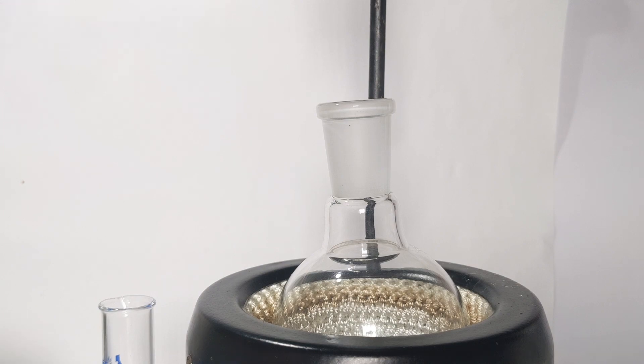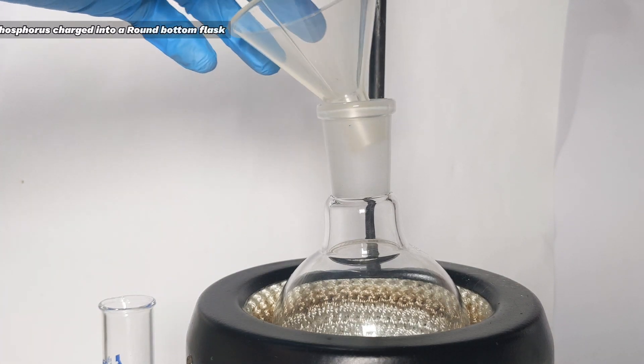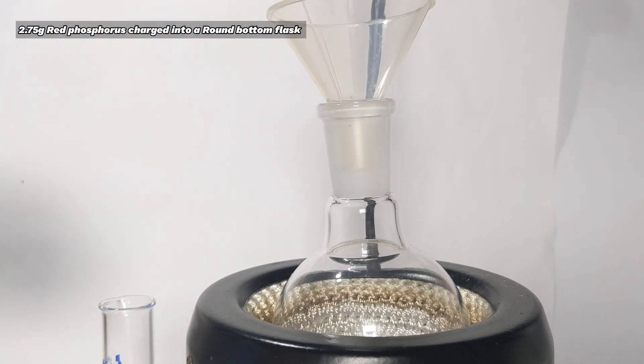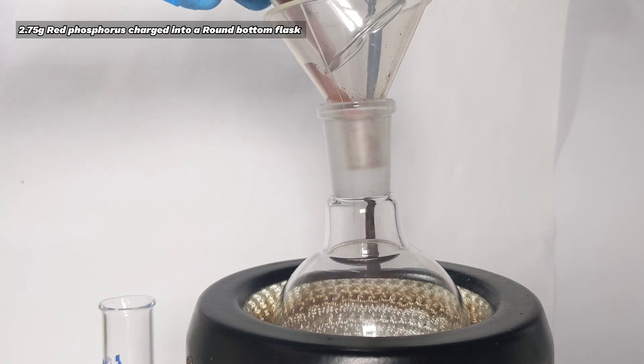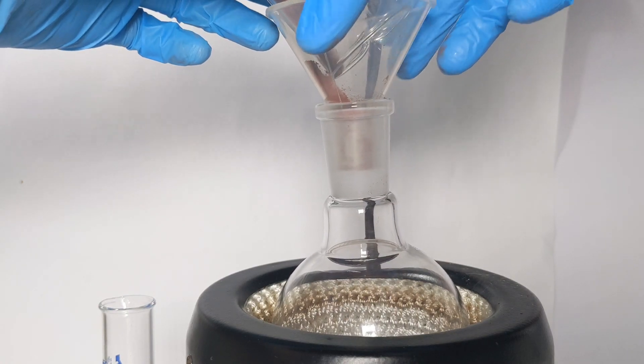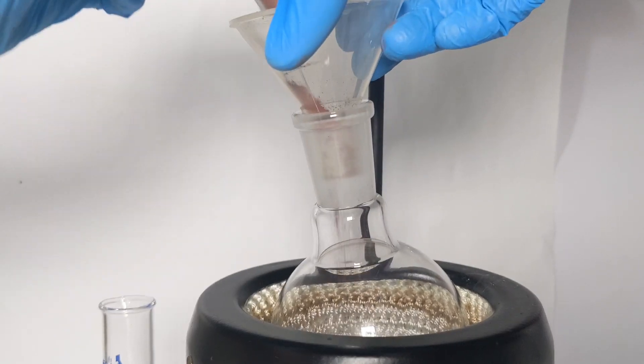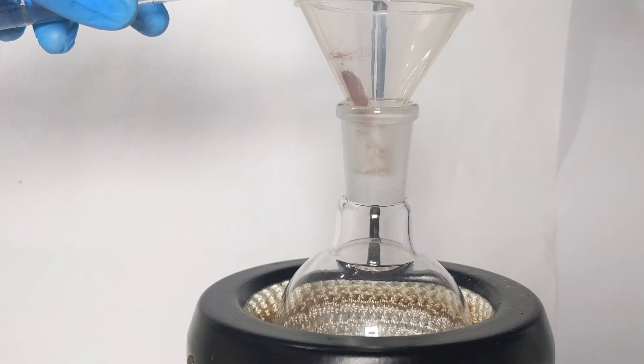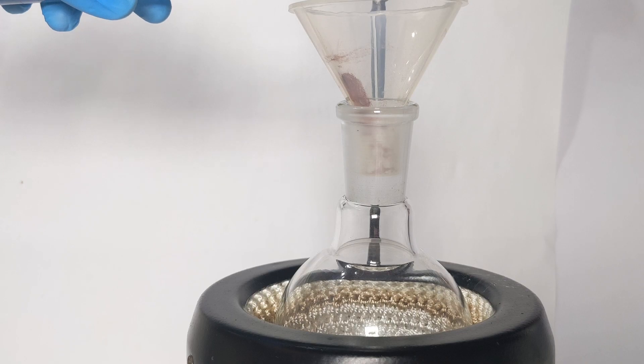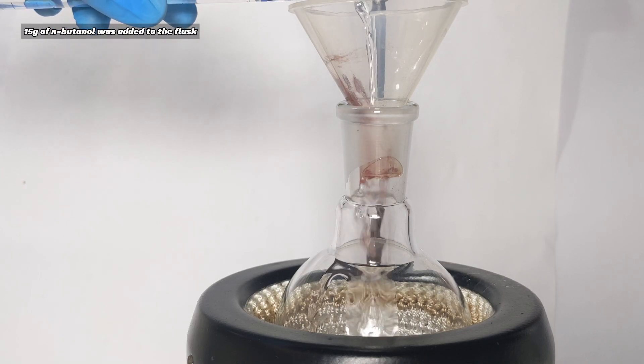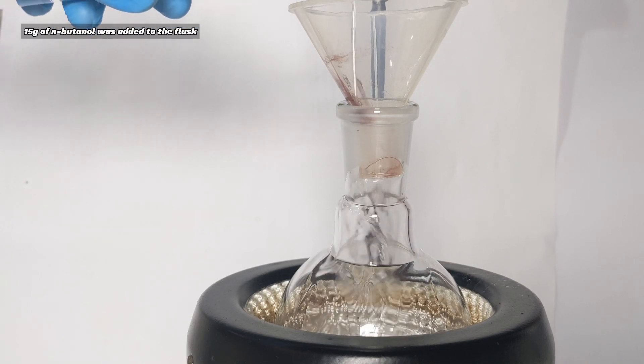The round bottom flask was charged with 2.75 grams of red phosphorus. You can see that the finely powdered phosphorus got attached onto the funnel and in the beaker in which it was placed. Both were washed down with n-butanol. Red phosphorus is flammable and care must be taken while handling it.